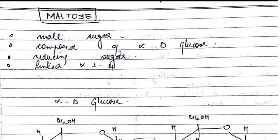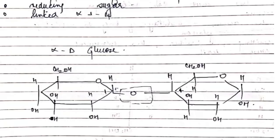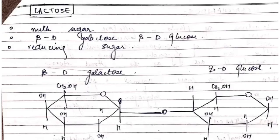Next is maltose, which is a malt sugar composed of alpha-D-glucose. It is a reducing sugar. A glycosidic linkage is formed by loss of a water molecule, as shown in the diagram. In exams, you are usually asked to describe disaccharides and polysaccharides in detail, so you must be familiar with these diagrams and structures.